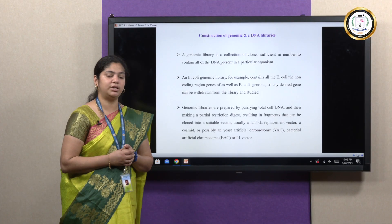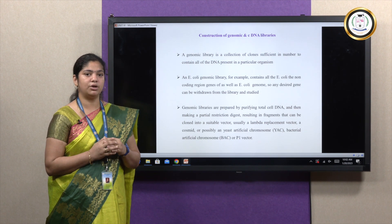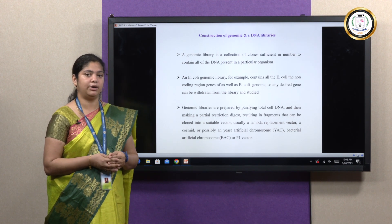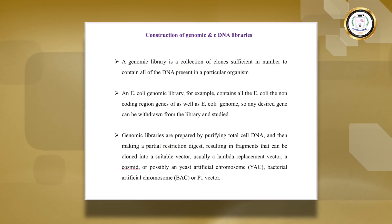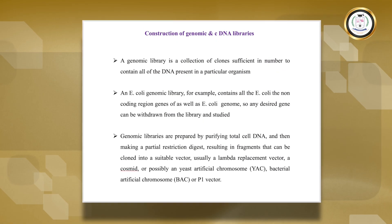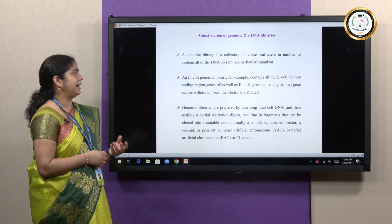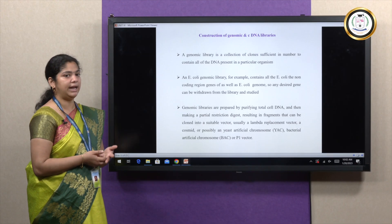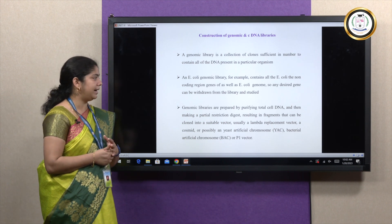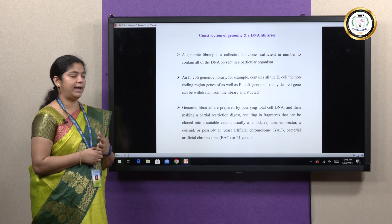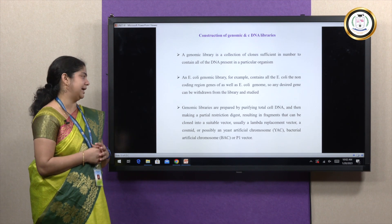How are the libraries created? Once we know the target gene of interest, we can perform recombinant DNA technology. There are both genomic and cDNA libraries. A genomic DNA library is a collection of clones containing all of the DNA present in an organism — a complete genomic library allows us to obtain the entire whole-genome sequence of a particular organism.